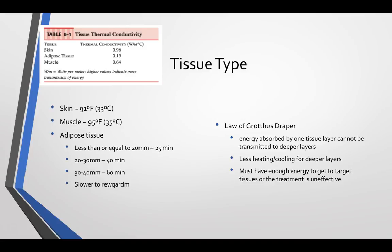Tissue type is going to affect how heat is transferred, and whether that tissue is our target tissue is important. Usually at skin level, resting temperature is about 91 degrees Fahrenheit or 33 degrees Celsius. Muscle, as we go deeper, is usually about 95 degrees Fahrenheit or 35 degrees Celsius. Skin temperature is really affected by ambient temperature, humidity, whether we've been exercising, time of day, as well as food eaten and alcohol consumed — all of that will affect skin temperature.